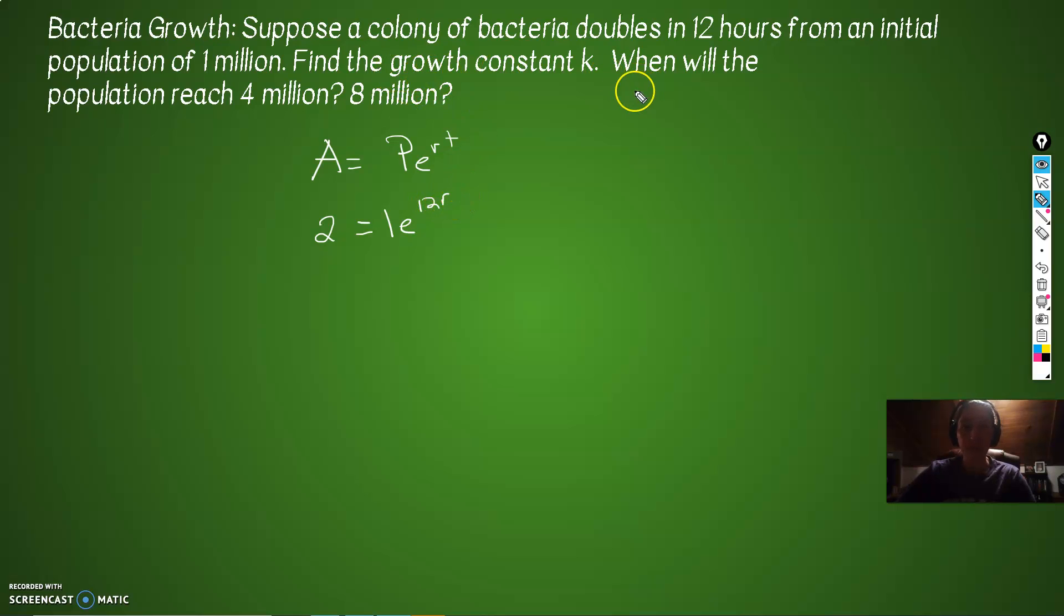Okay, let's solve for our growth constant first. And then we'll answer these two other questions. So 1 times E is simply E. So 12R. Let's get rid of that E by using our LN. LN both sides, not the name LN. So LN of 2 equals 12R. Divide by 12. R is going to equal LN of 2 divided by 12, which is 0.06. All right, so we figured out our R.